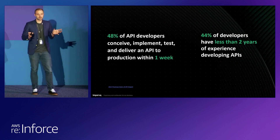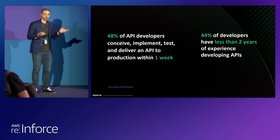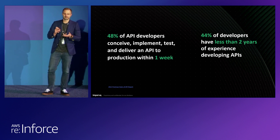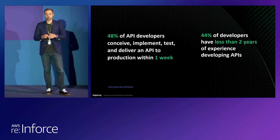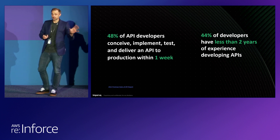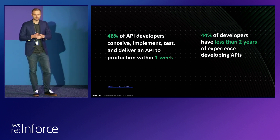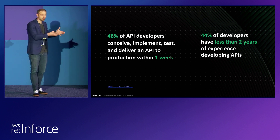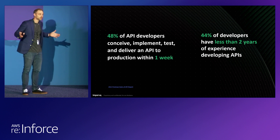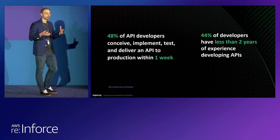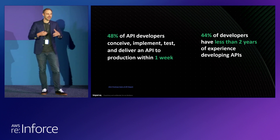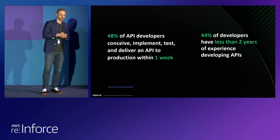Here's a great stat from the Postman State of API Development Report for 2022: 48% of API developers conceive, implement, test, and deliver an API to production within one week. This is an absolutely astounding pace of development. What this tells me is that for the last 10 years, as we've been talking about DevOps, most organizations are actually doing it — they have CI/CD pipelines set up and everything that enables them to deploy very quickly and get workloads into production. So congratulations — give yourselves a round of applause if you're responsible for DevOps.